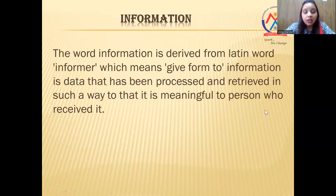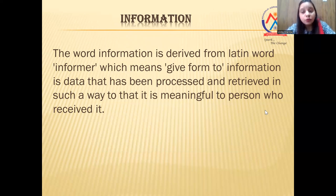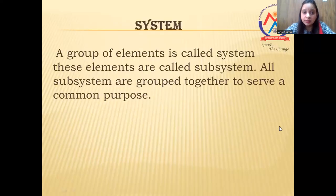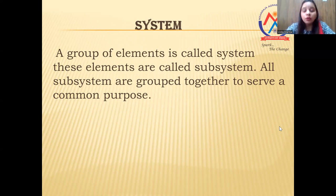Next is information. The word information is derived from the Latin word 'informare,' which means 'give form to.' Wherever we have any data that has been processed and retrieved in such a way that it is meaningful to the person who received it, that is information. Last is system — a group of elements is called a system. These elements are called subsystems, and all the subsystems are grouped together to serve a common purpose.